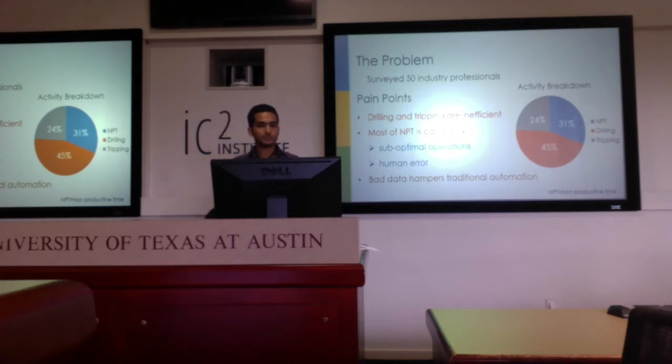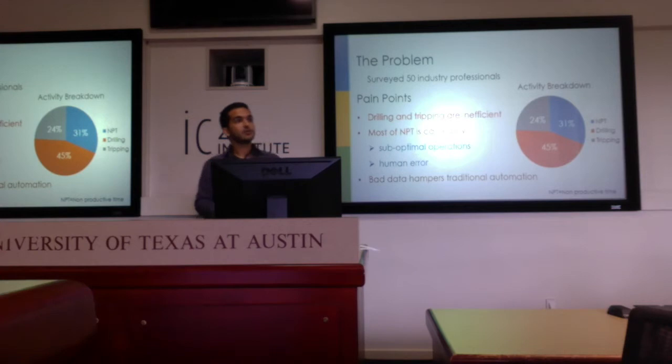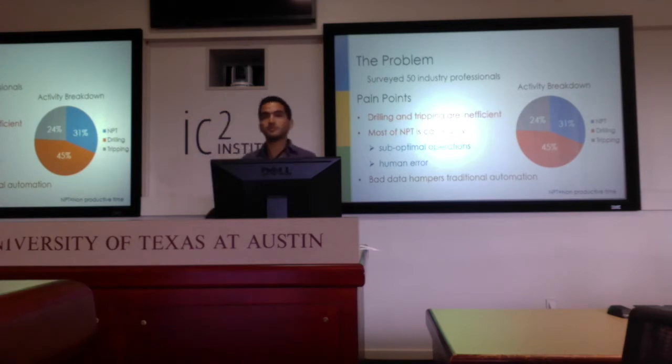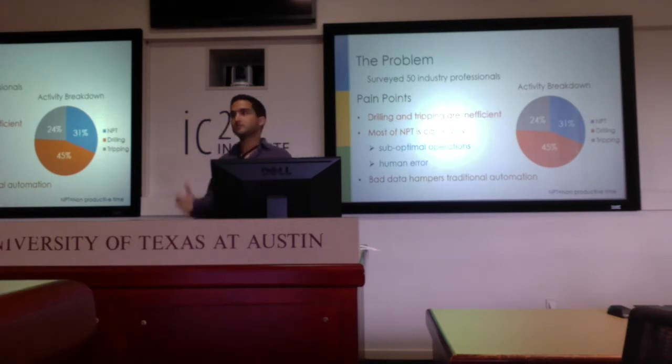Another source of inefficiency is what we call nonproductive time, which accounts for about 30% of the total drilling time it takes to drill a well. This nonproductive time is basically caused by incidents that could have been prevented — it's the time the crew is sitting and waiting for the incident to be fixed. This nonproductive time is caused by suboptimal operations and human error, and therefore there's opportunity for automation.